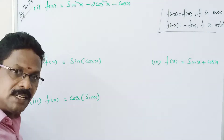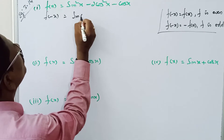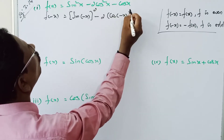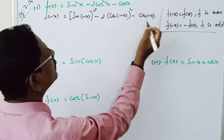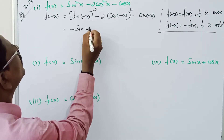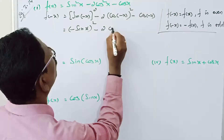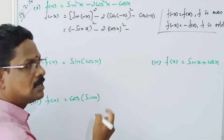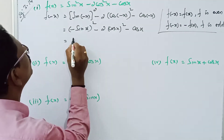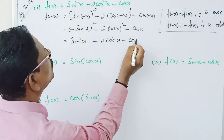For the first problem, f of minus x equals sin(minus x) whole square minus 2 into cos(minus x) whole square minus cos(minus x)·sin(minus x). Since sin(minus theta) equals minus sin theta, this becomes minus sin x whole square minus 2 into cos x whole square minus cos x · sin x, which simplifies to sin squared x minus 2 cos squared x minus cos x sin x.